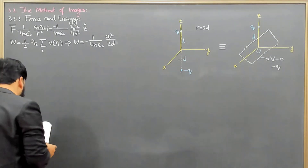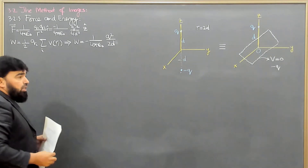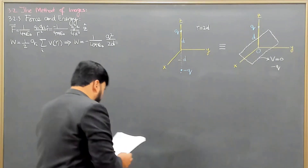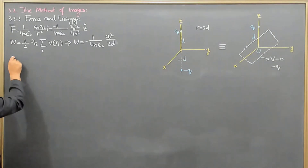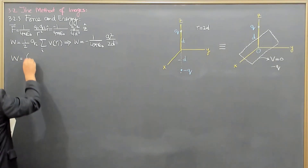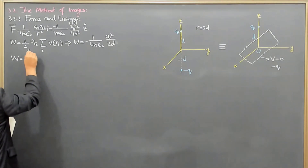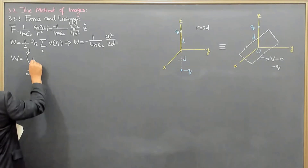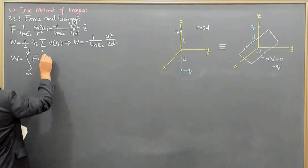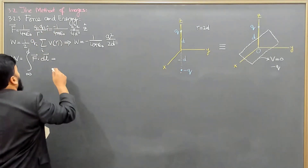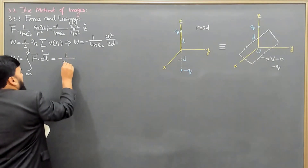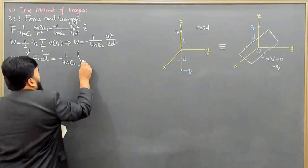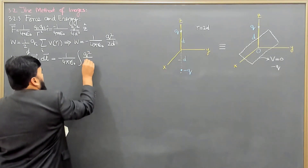The work for the two-charge geometry was calculated in the second chapter, and I have provided a link to that video. Now for the single charge and grounded sheet geometry, the work is the integral from infinity to d, since the charge is at distance d from the sheet. The force we already have is minus 1 over 4 pi epsilon naught times q squared over 4z squared.